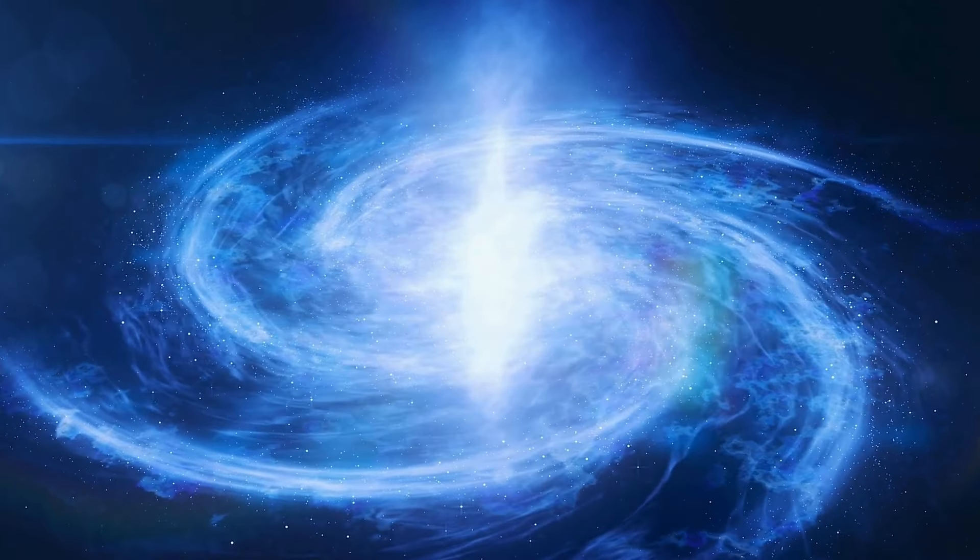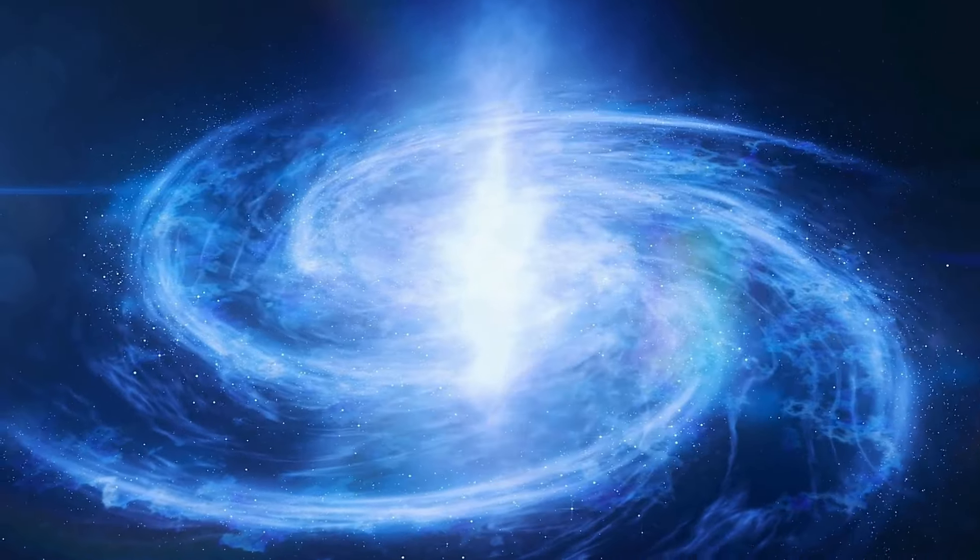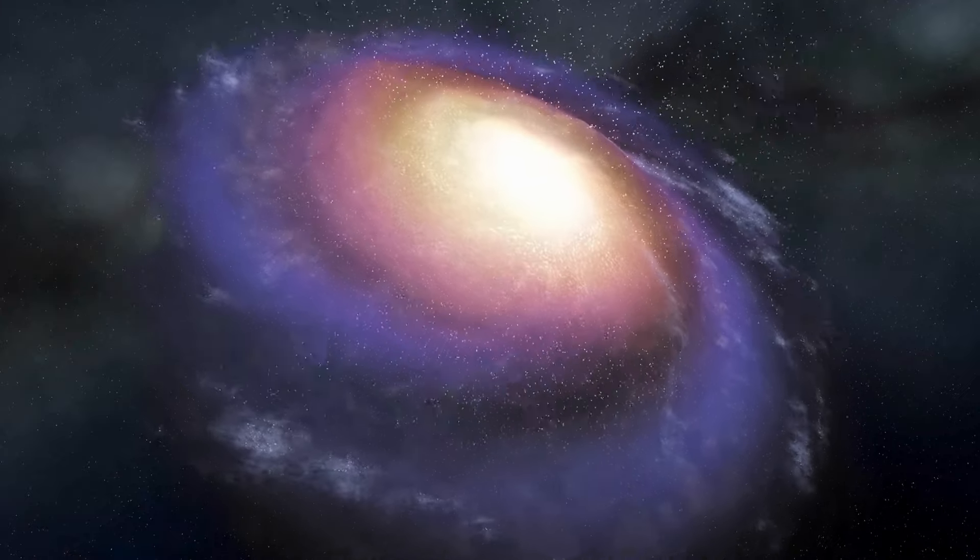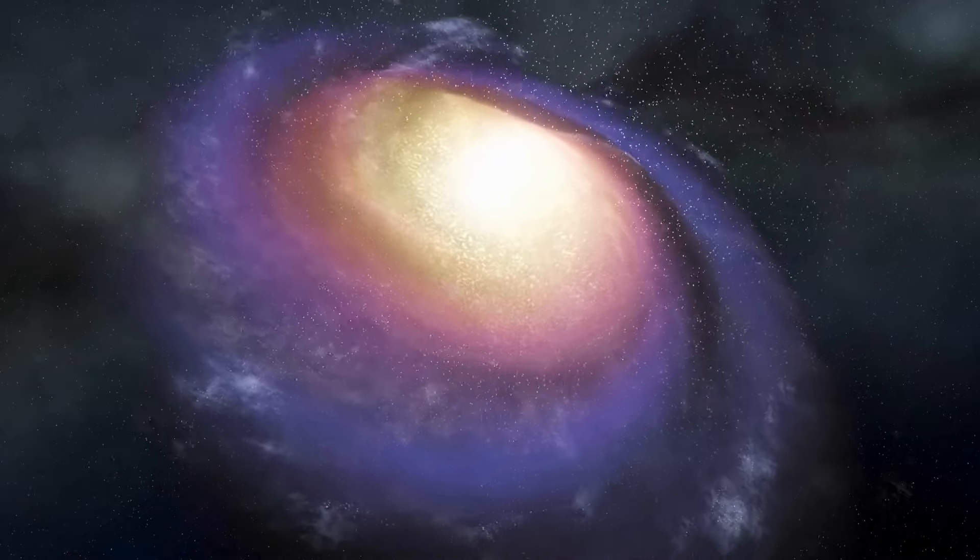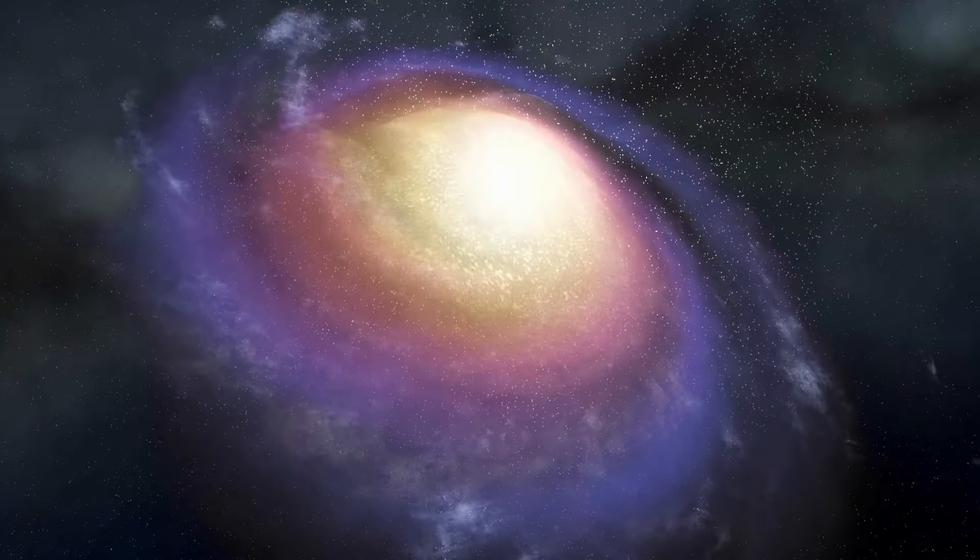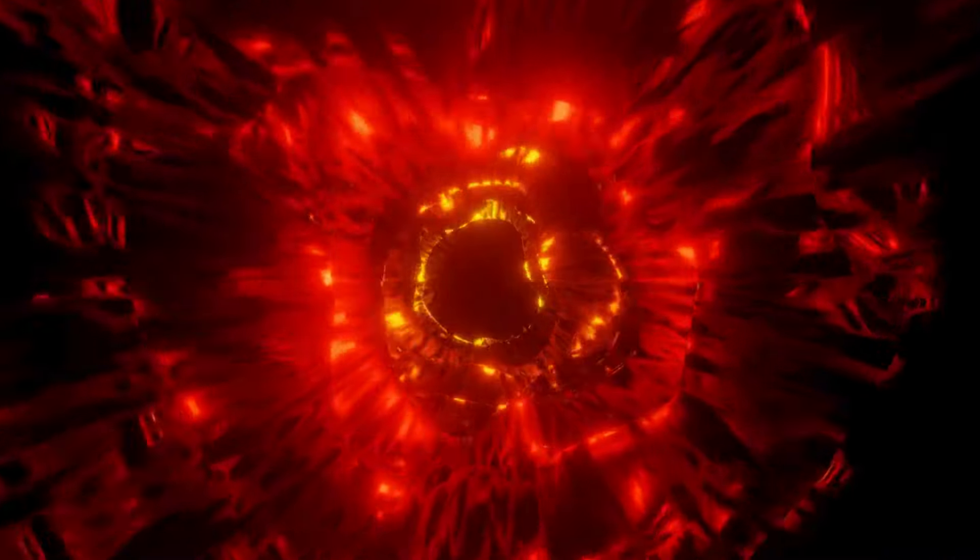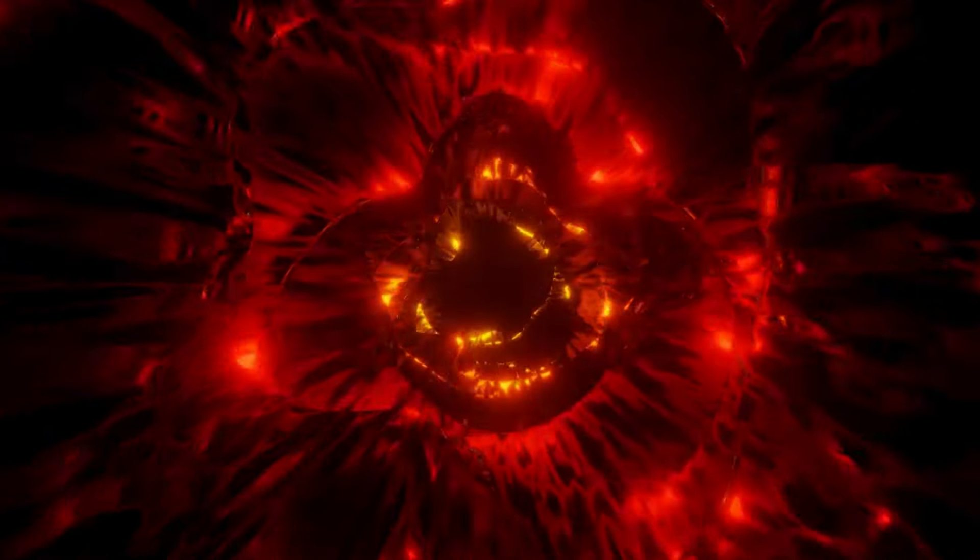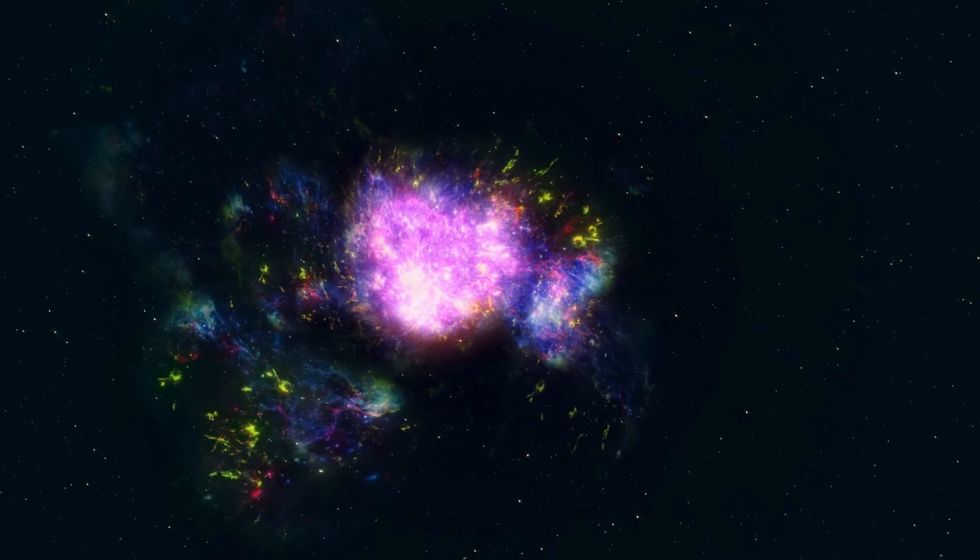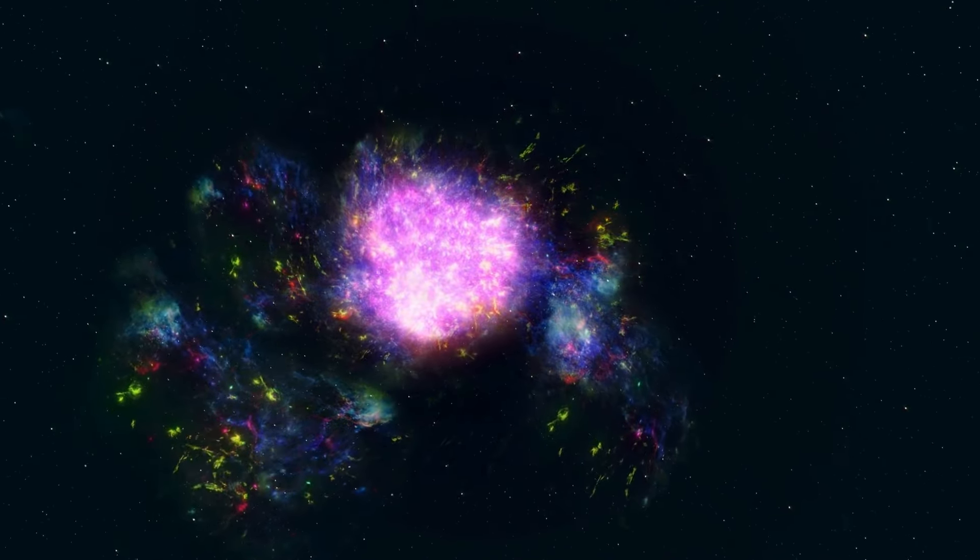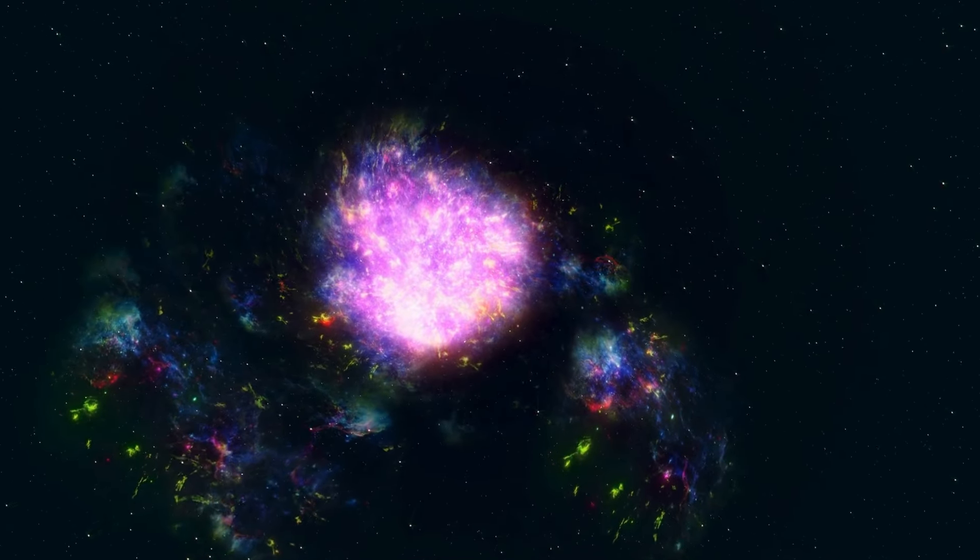While Betelgeuse's supernova is not expected to have harmful effects on Earth, it will interact with our planet's atmosphere and magnetic field in fascinating ways. The energy burst from the explosion, particularly the emission of cosmic rays and charged particles, could result in more intense auroras, expanding the regions where the northern and southern lights are visible. While these astronomical rays might affect satellite communications and some technology on Earth, the disruptions are expected to be minor and short-lived.